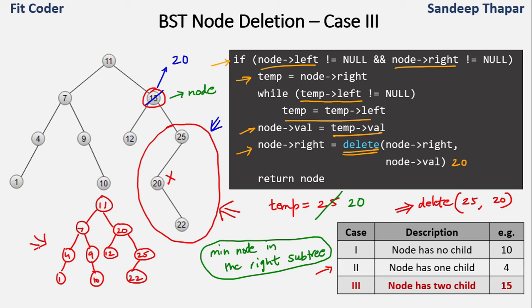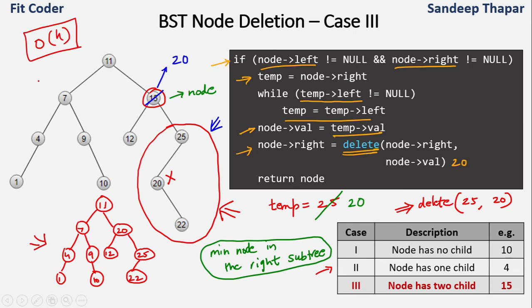The concatenation of all three cases completes BST node deletion. The time complexity of BST node deletion is O(h), where h is the height of the tree. Now that we've seen all three categories, let's see how we can implement this.